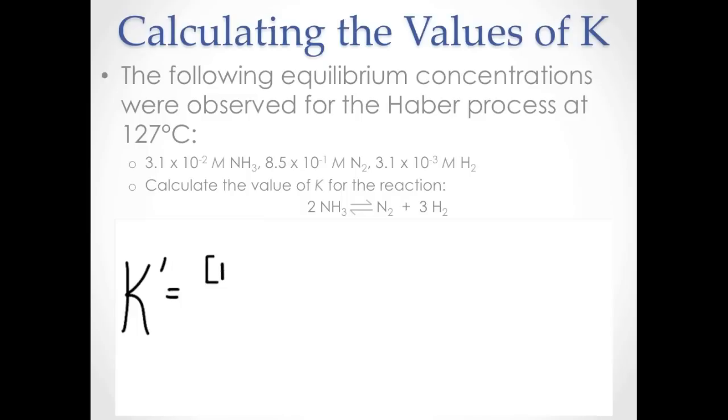By using the law of mass action for this reaction, substituting the same concentrations and calculating the value of the rate constant, we can see that our new rate constant, let's call it K prime, is the reciprocal of our previous rate constant.